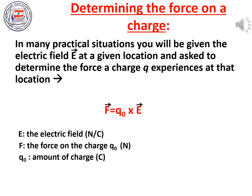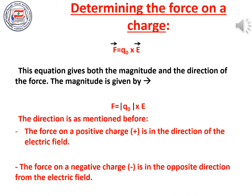Determining the force on a charge: in many practical situations, you will be given the electric field E at a given location and asked to determine the force a charge Q0 experiences there. Use the equation F = Q0 × E. The vector of the force equals the charge in coulombs times the vector of the electric field in newtons per coulomb; the force is measured in newtons. This equation gives both the magnitude, F = |Q0| × E, and the direction: positive charge → same direction as E; negative charge → opposite direction from E.